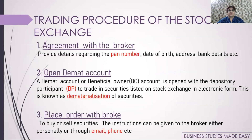Step 1: Agreement with the broker. You find a broker or sub-broker, provide your PAN number (mandatory), date of birth, address, bank details, fill a form, and receive a client ID for future transactions. Step 2: Opening a DMAT account, also called a Beneficial Owner (BO) account. This is called dematerialization — all securities you buy will be kept electronically in this account, just like a locker in a bank for jewelry.